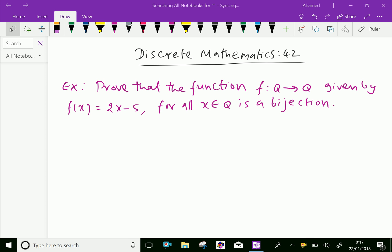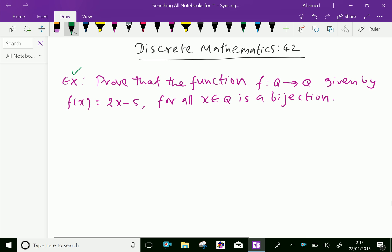Welcome to amineacademy.com. In discrete mathematics, let us do an example problem regarding functions to prove the function is bijective. Prove that the function f: Q → Q given by f(x) = 2x - 5 for all x ∈ Q is a bijection.